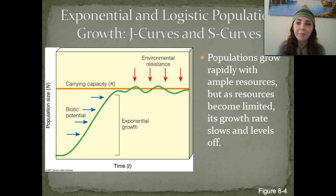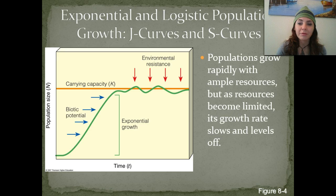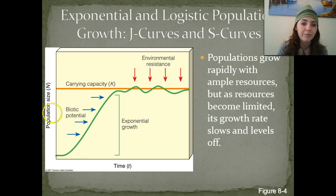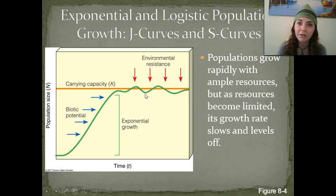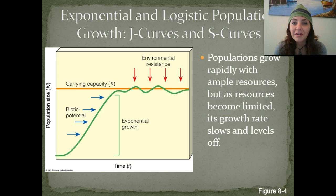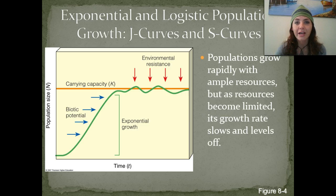Populations grow rapidly with ample resources — lots of food and water — but as those resources become limited, the growth rate will eventually slow and level off. Looking at this graph, you can see the first part is exponential growth, shooting straight up with very rapid growth. Eventually, they get to the carrying capacity where something limits that population from continuing to grow, whether it's space, available food or water, shelter, or even mates — some limiting factor prevents exponential growth forever.